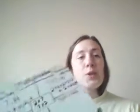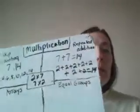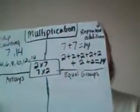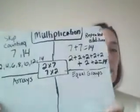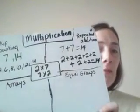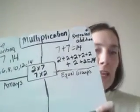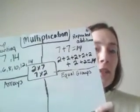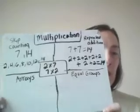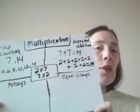Today we'll focus on strategy 3 for solving the multiplication problem of 2 times 7 and 7 times 2. I'm using my whiteboard, and if you have a piece of paper, I'd recommend grabbing that and pausing the video when needed. We're going to focus on creating a multiplication array.